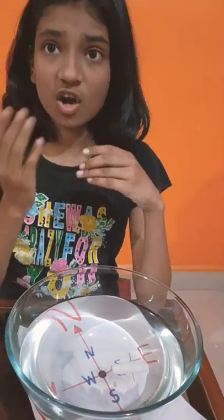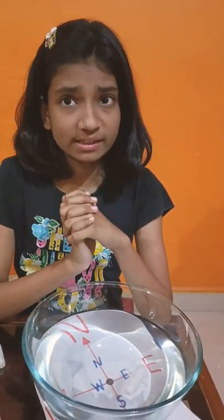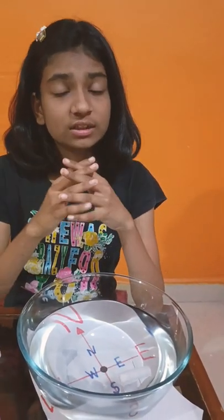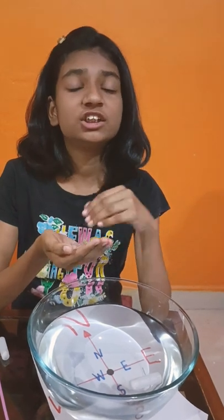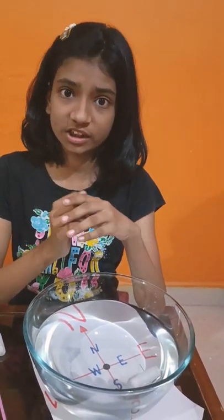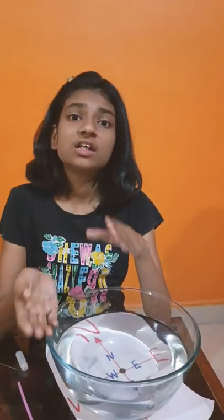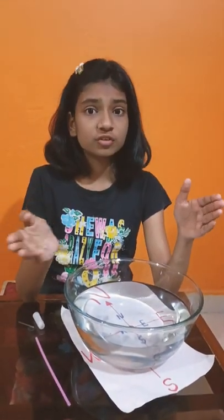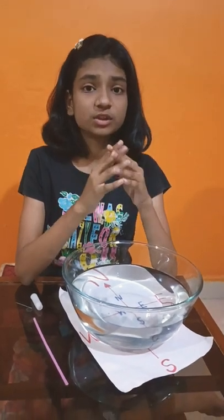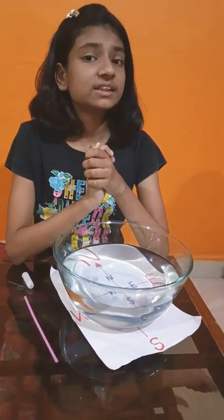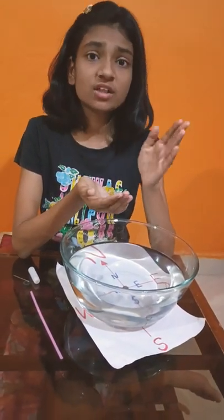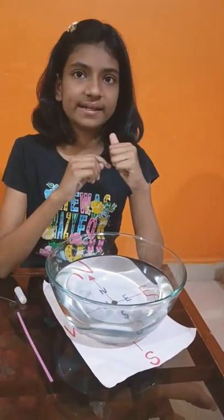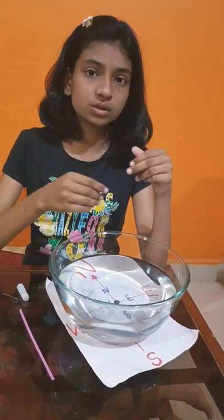Now why does this needle show north and south direction only as a magnetic compass? Because the earth's north direction is geographically at the south direction while the earth's south direction is geographically in the north direction. Therefore this opposite force attracts each other. Therefore this magnetized needle shows the direction.